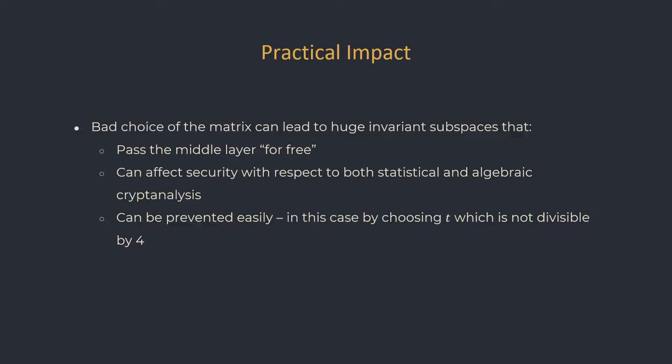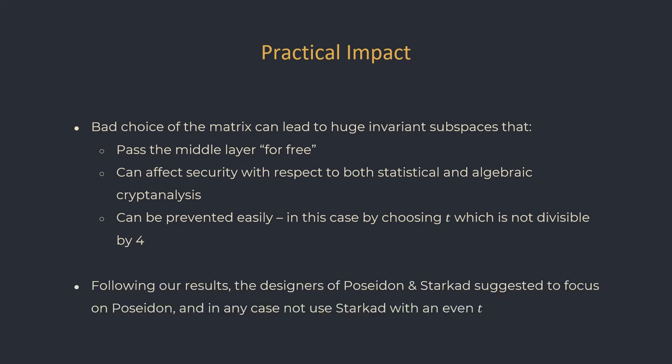As we've seen from Starkad, a bad choice of matrix can lead to big invariant subspaces that pass the entire middle layer without activating a single S-box. In contrast to Poseidon, in which the middle layer could dramatically increase the security against differential and linear attacks, in Starkad the middle layer does not increase security at all, and algebraic attacks can be launched against the cipher. Most importantly, preventing the invariant subspace is really easy — all we need to do is choose any T which is not a power of 2. Following our results, the authors of Poseidon and Starkad recommended to use only Poseidon, and if using Starkad anyway, use it only with an odd T.